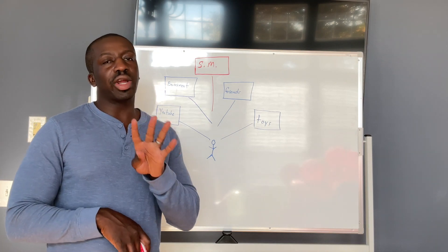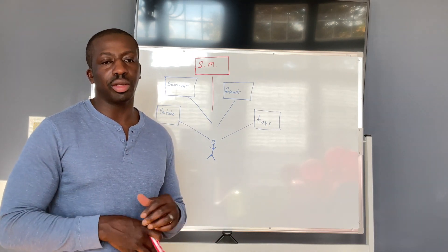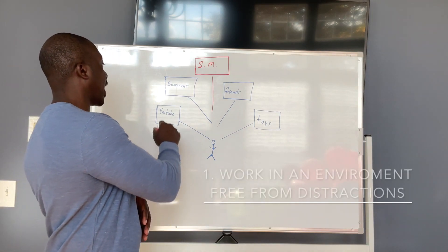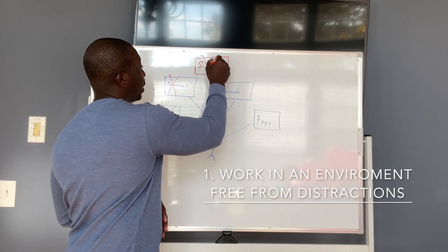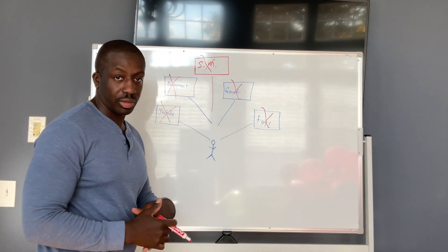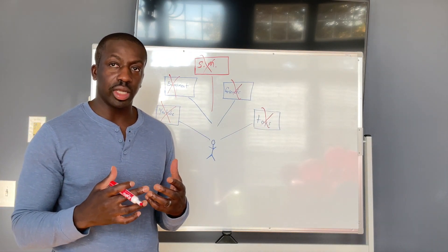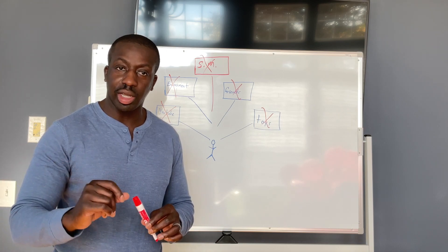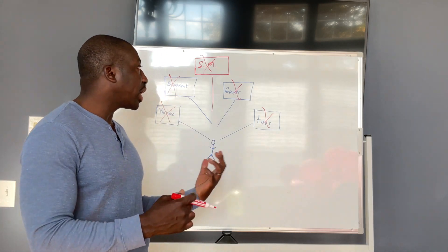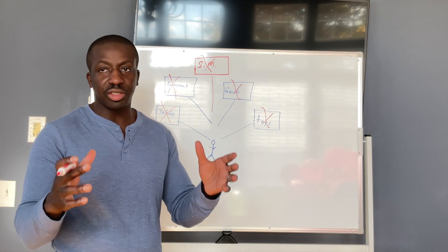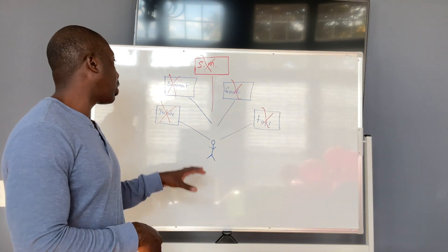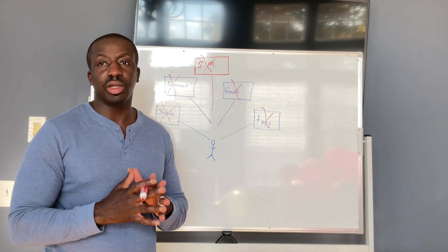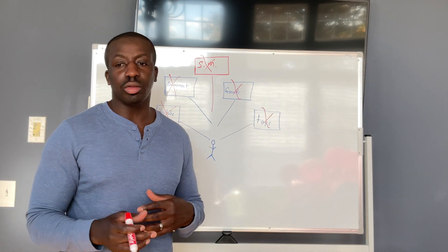I'd like to talk about four activities you can do to help your child improve their ability to focus. The first one is obvious but removing all distractions from an environment is going to be important. When you think about where your child is working — are they in an environment free of toys? That way, as they're working, they're not constantly looking at the toy they'd rather be playing with. Are they working in an environment where there's no noise, very few distractions, no TV on, no access to things that are overly stimulating?